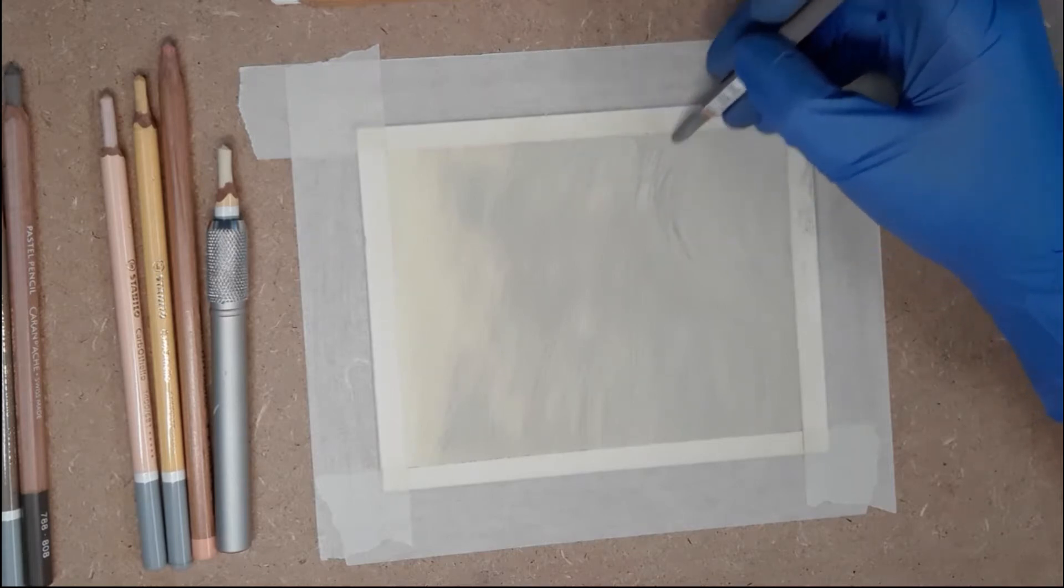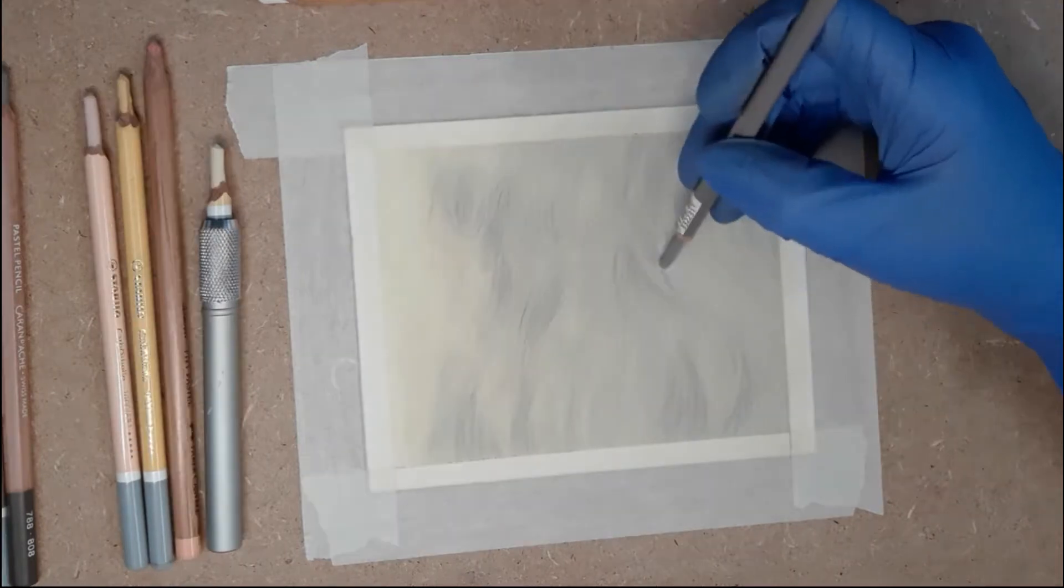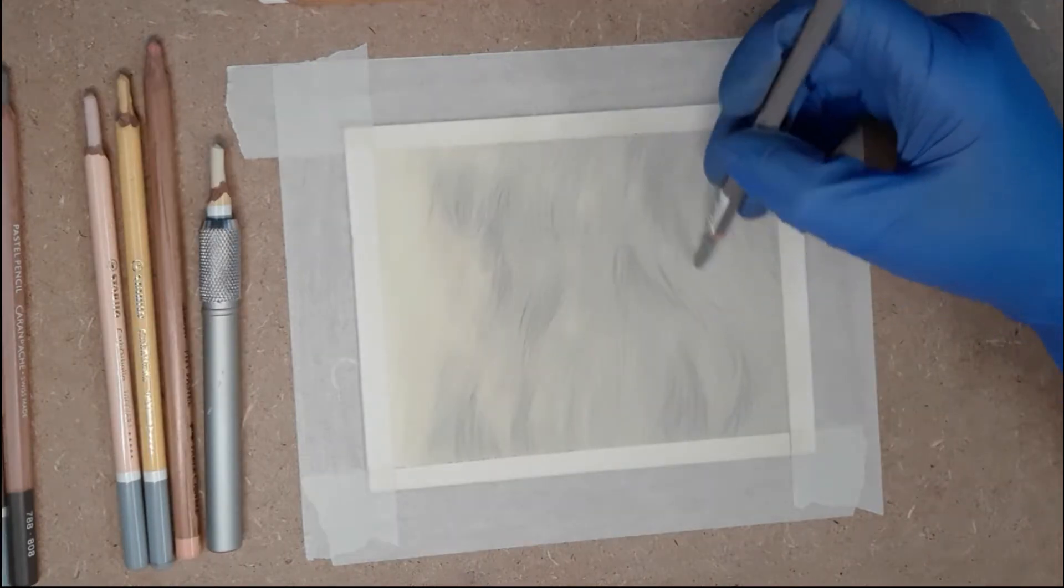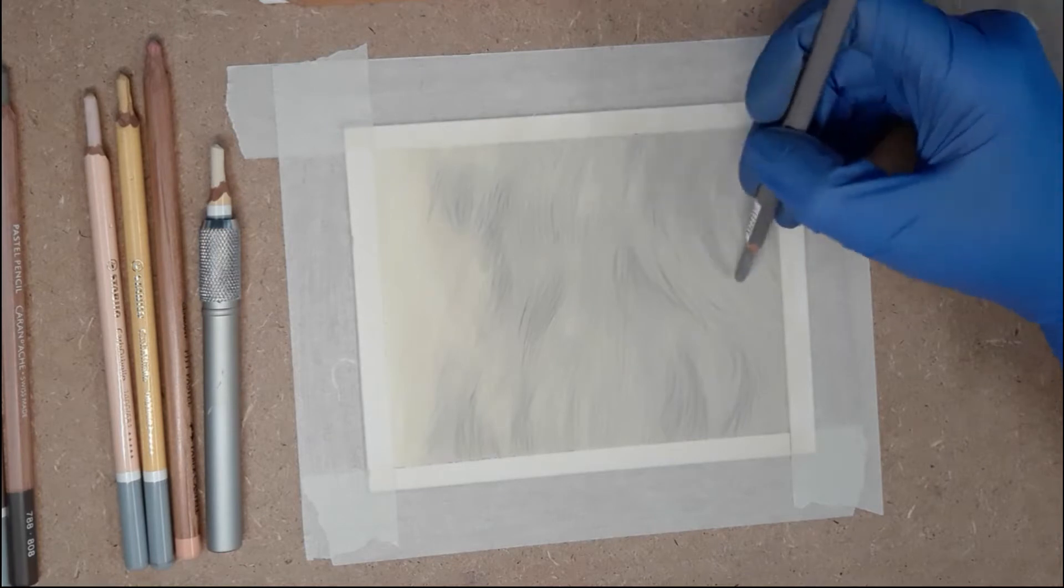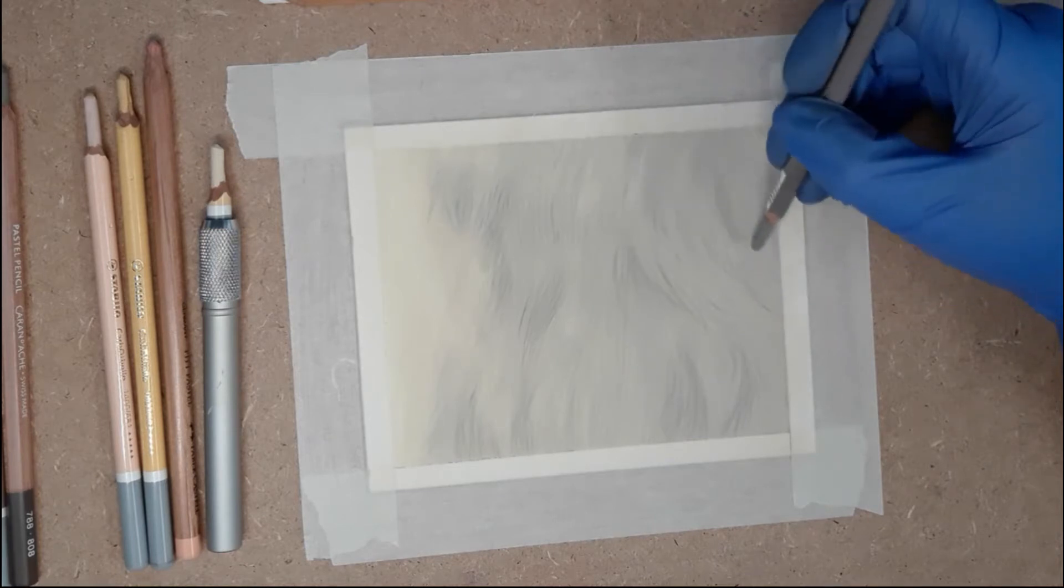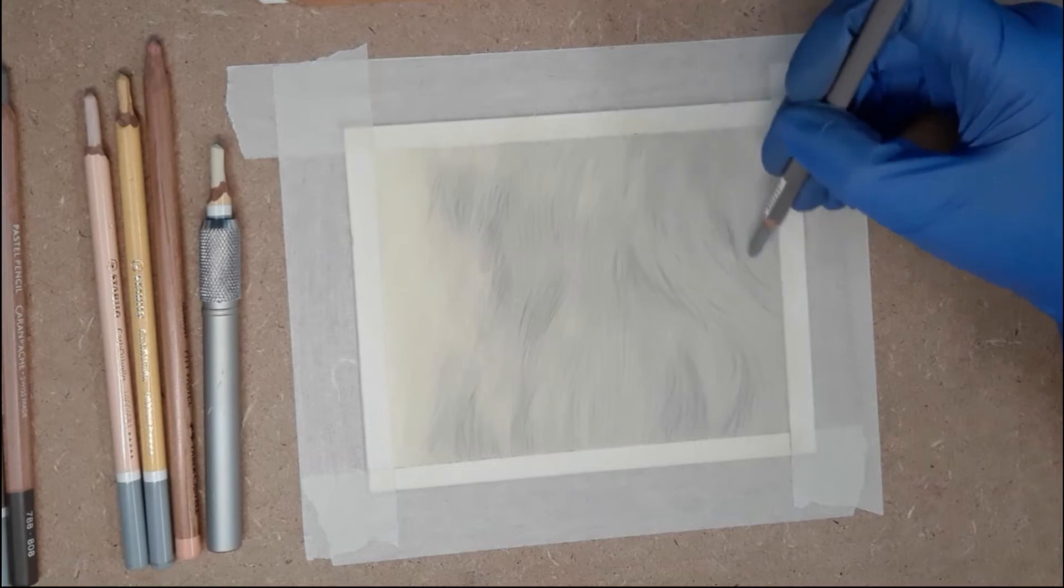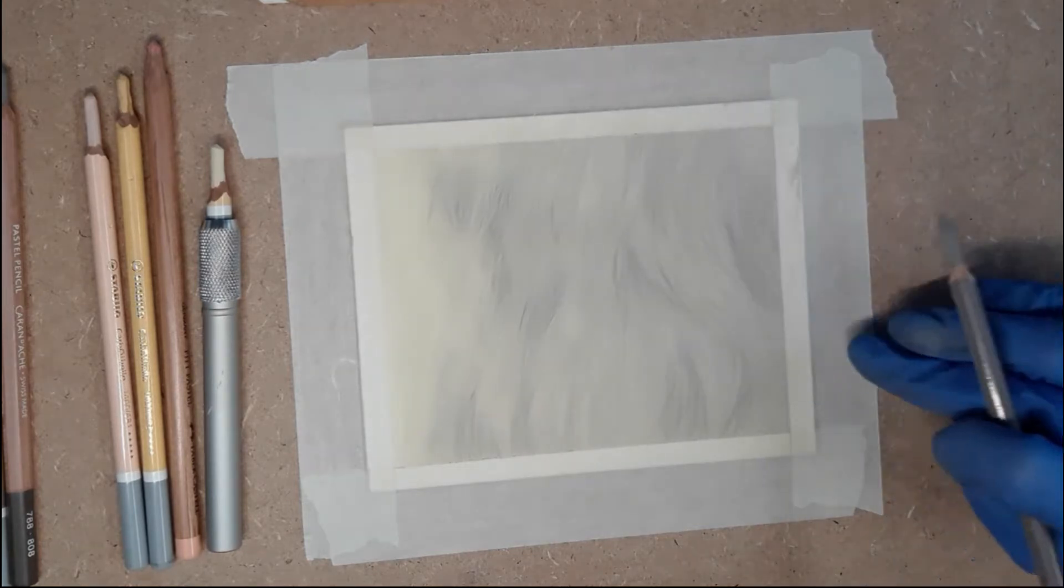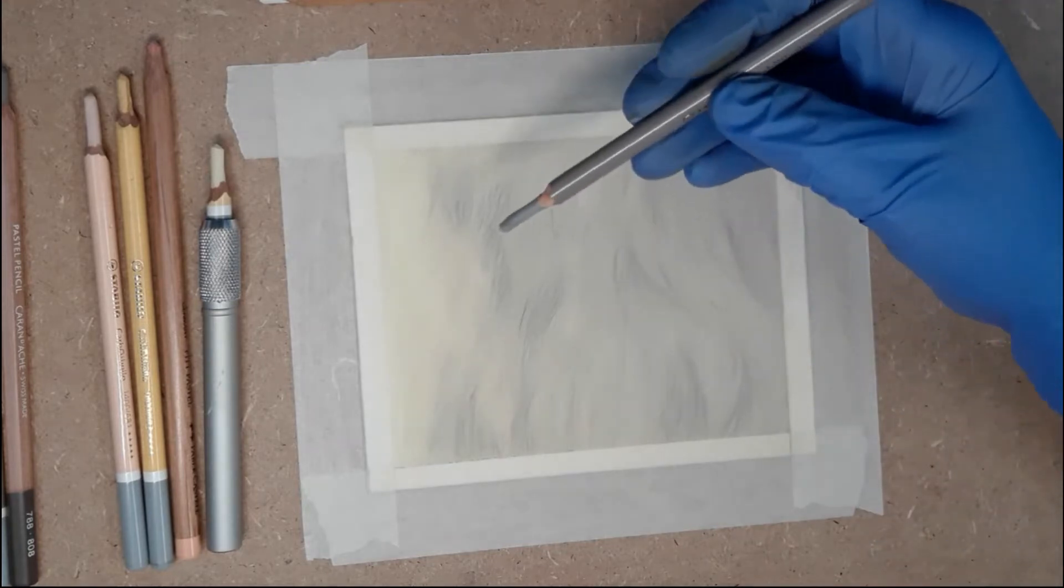When adding these lines it's really important to follow your reference photo because they define the clumps of hairs you see in your subject. As you can see I'm blending them out a little, just a soft touch goes a long way. I do this because I prefer a softer look but you can also just leave it the way it is. Whichever way you choose to work is just fine.